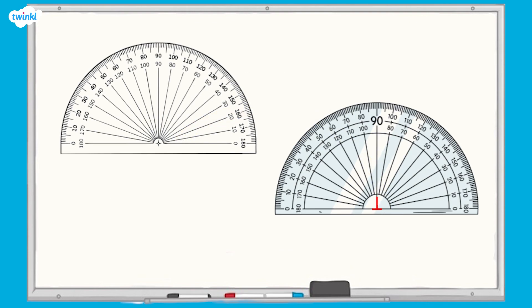There is always a center point on the protractor to help you position it on the angle correctly. Sometimes this looks like a dot or an upside down T.